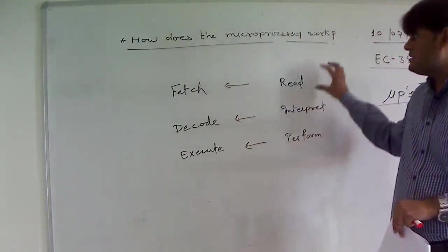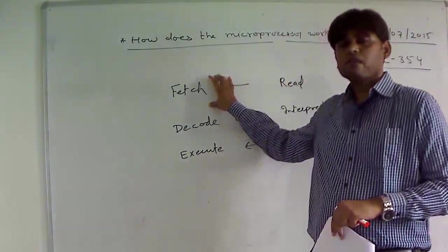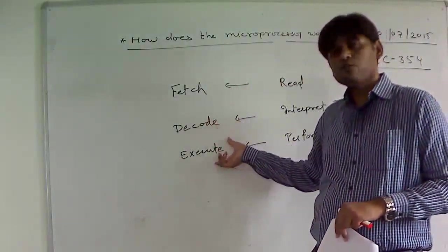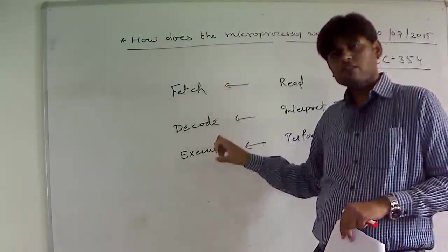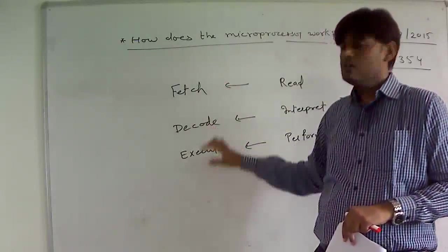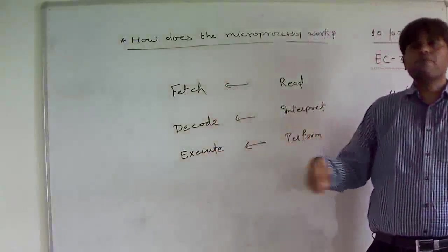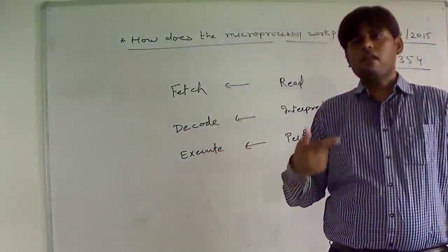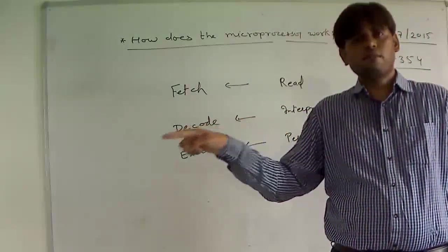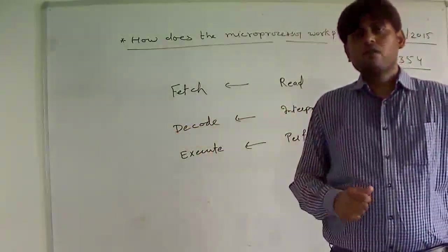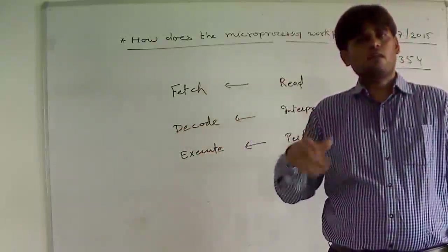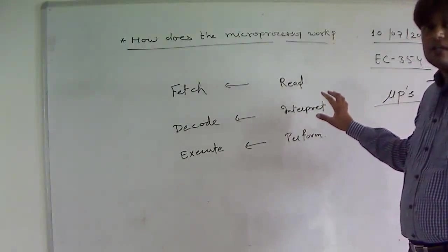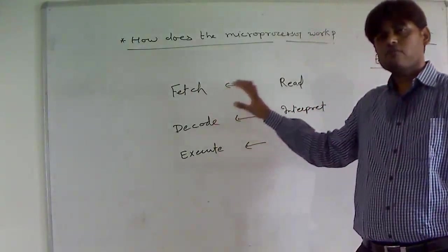The microprocessor fetches the instructions, decodes the instructions, and executes the instructions. This fetch-decode-execute cycle runs continuously until the last instruction is reached. For a microprocessor-based application, the last instruction will be a HALT instruction in an assembly language program, meaning to stop execution, or in C language it is 'end', meaning again to stop execution. That is how the microprocessor works, explained using these three words.